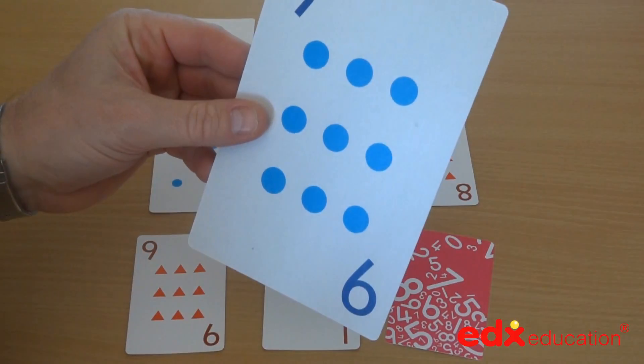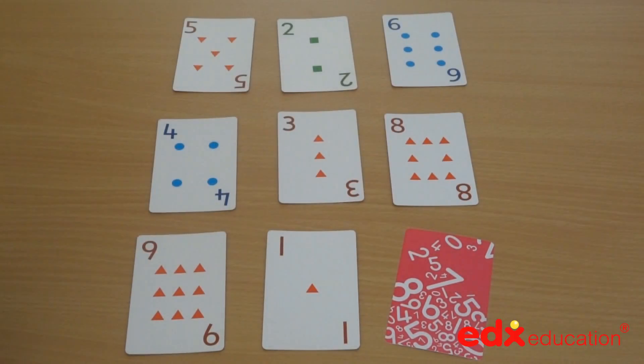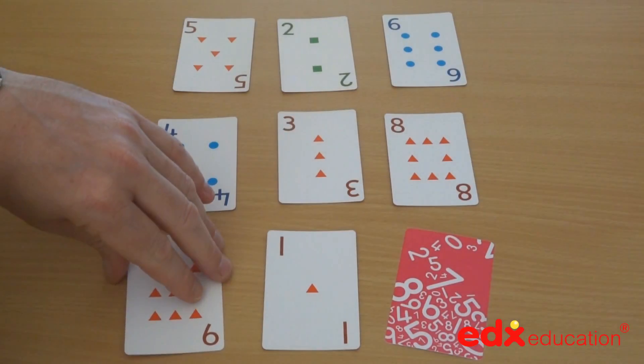The next card I might turn over is nine. So I'm going to double it. I'm going to call out 18, and the children have to turn over the card that is half of 18.